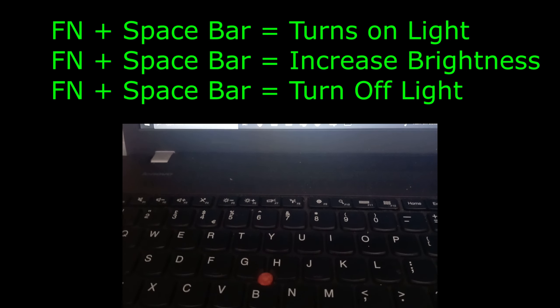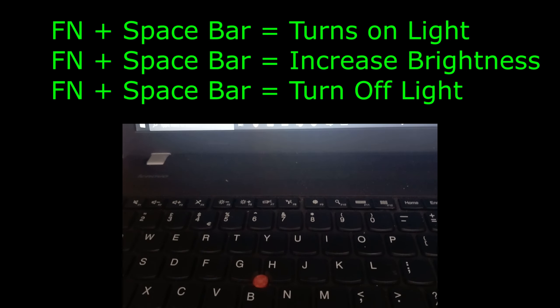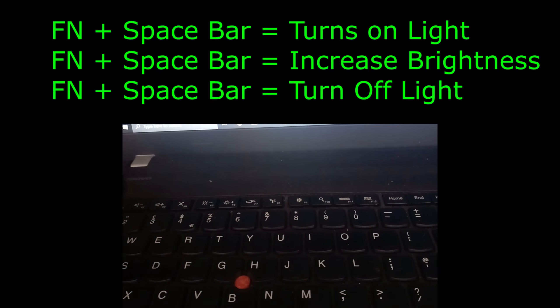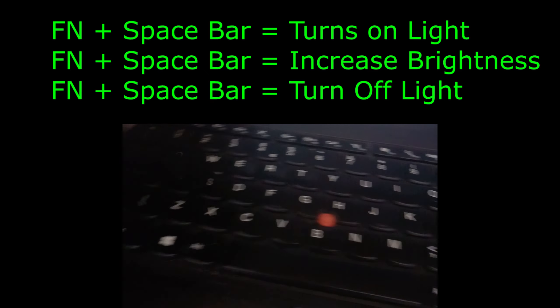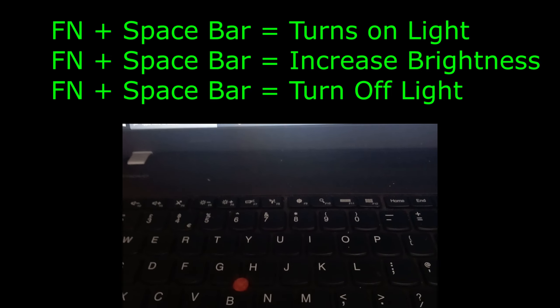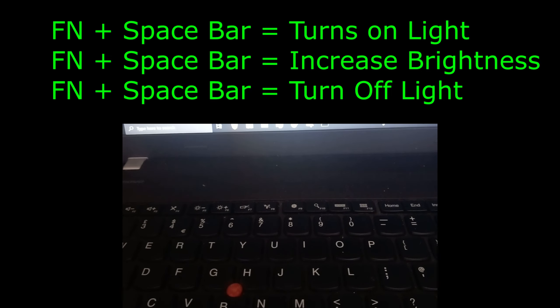So if you click on it once, this is now going to turn on the light. If you want to increase the light sensitivity, then you're going to click on Fn and the space bar again. Click on both Fn and the space bar again, which will then increase the light sensitivity. It's going to make it brighter.